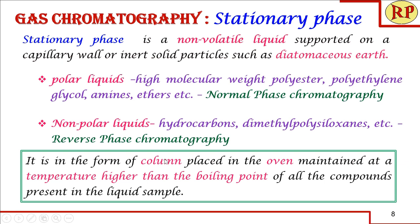The mechanism depends on the type of stationary phase. The stationary phase is in the form of a column placed in an oven maintained at a temperature higher than the boiling point of all components present in the liquid sample, so that the sample does not condense inside the column.